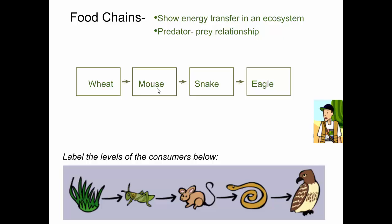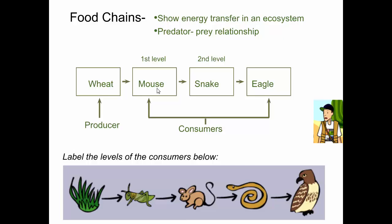The wheat in this example is a producer — everything else is a consumer, a heterotroph. We number the consumers to tell us where they are in the food chain. The mouse would be the first-level consumer, the snake is the second-level consumer, and the eagle is the third-level consumer. We don't number the wheat because it's not a consumer — it's a producer.